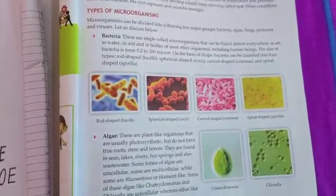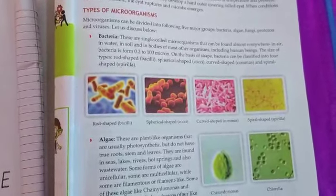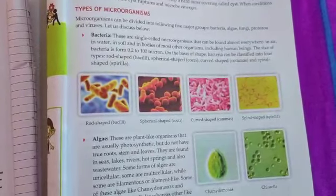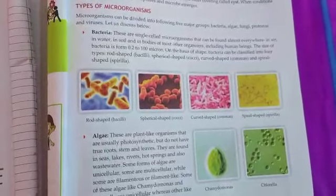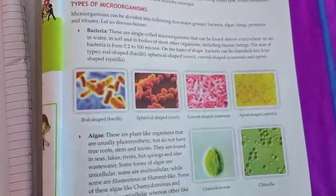First: bacteria — जीवाणु. These are single-celled organisms that are found almost everywhere. Bacteria एक कोशिकी सूक्ष्म जीव होता है जो की हर जगह पाया जाता है — in air, in water, in soil, and in the bodies of most other organisms, including human beings.